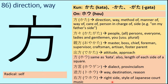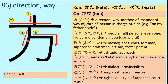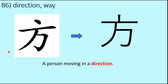This character is a radical in itself. Looking at the stroke order: first stroke, second stroke, third stroke — you might expect a different order, but the stroke order is: first stroke, second stroke, third stroke, and then the fourth stroke. This is somewhat unusual. The ancient symbol looks like a man running in a direction — a person moving in a direction — and that's why it represents direction or a way. This is how the symbol looks in modern script.